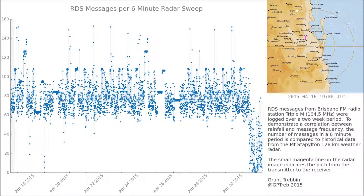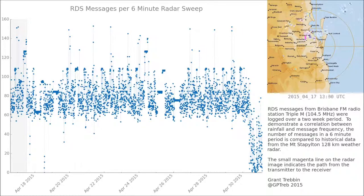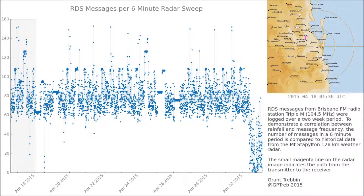Hi, I thought I'd just give a quick explanation of what's happening in this animation. I'm trying to see if there's a correlation between weather, particularly rainfall, and the number of RDS messages I can receive from a local radio station.